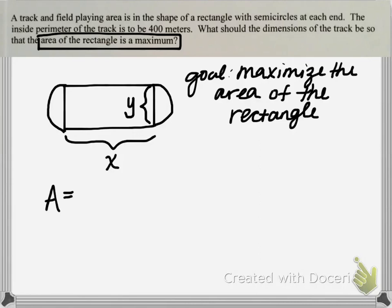Since my rectangle has a length of X and a width of Y, the area equation is simply A = X times Y. Looking at this function, you'll notice we have too many variables — two inputs, X and Y, and one output, A for area. So this is where we need to write a second equation, which I call a constraint equation.